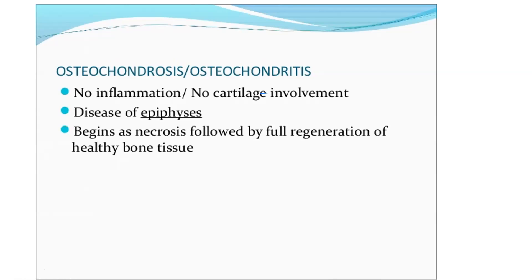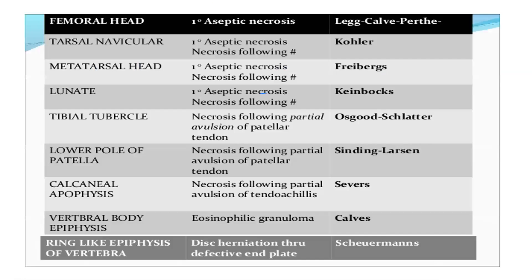In osteochondrosis, it sometimes goes into necrosis, and then there is full regeneration. You just need to remember the location and names — this is totally MCQ-based material. There is a mnemonics approach you can use to remember where each type of osteochondrosis occurs and what it is called.